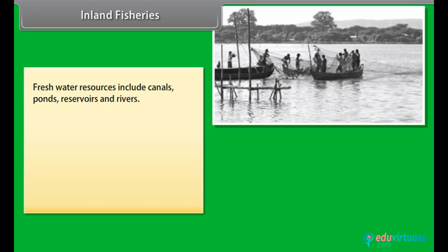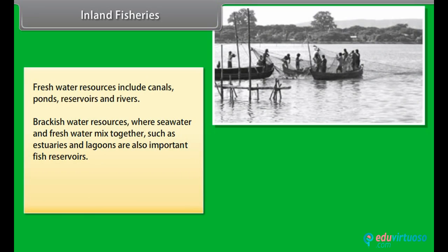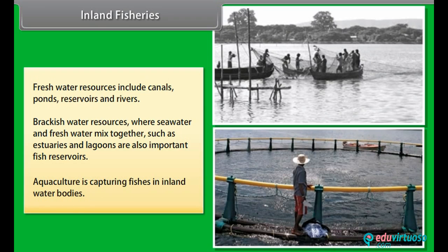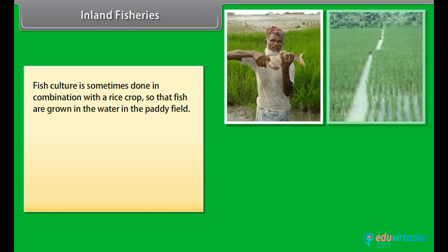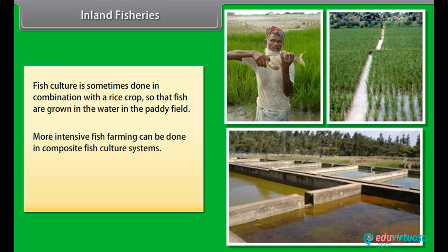Fresh water resources include canals, ponds, reservoirs and rivers. Brackish water resources, where sea water and fresh water mix together — such as estuaries and lagoons — are also important fish reservoirs. Aquaculture is the capturing of fishes in inland water bodies. Fish culture is sometimes done in combination with rice crops, so that fish are grown in the water in paddy fields. More intensive fish farming can be done in composite fish culture systems, using both local and imported fish species.